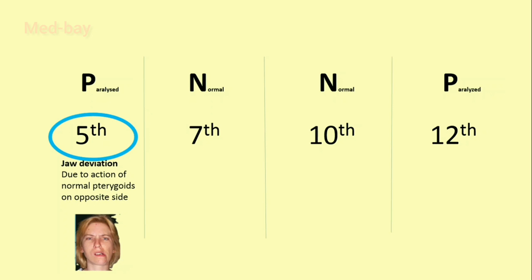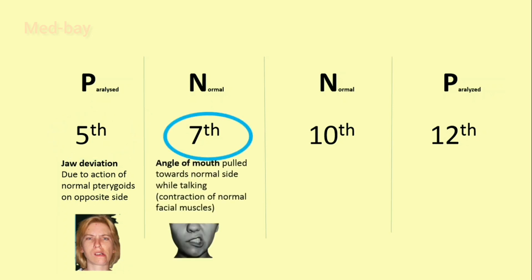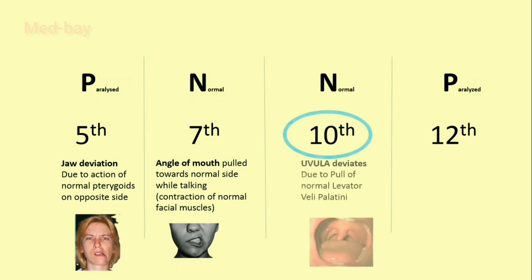In trigeminal nerve lesion, jaw deviation to the paralyzed side occurs due to the normal action of pterygoids on the opposite side. In facial nerve palsy, the angle of mouth deviates towards the normal side due to the pull of normal facial muscles.